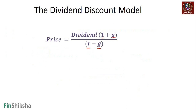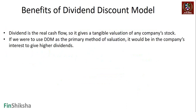The key benefit of the DDM is that dividend is the real cash flow — it gives a tangible valuation. There is no other cash flow available to a shareholder, so technically, if we use discounted cash flow in its purest sense, dividends are the only cash flow available to us.